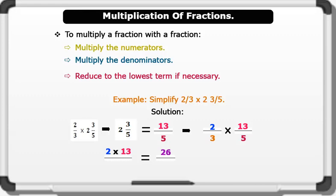Now we multiply the numerators: 2 times 13 gives us 26. We multiply the denominators: 3 times 5 gives us 15. That is 26 over 15. Reducing to the lowest term, we convert 26 over 15 to a mixed number, which equals 1 and 11 over 15. That's brilliant!